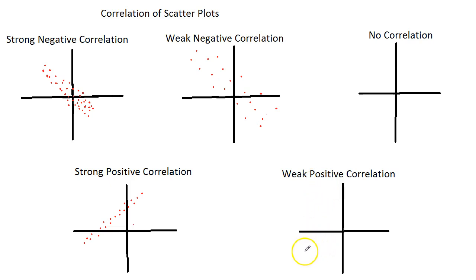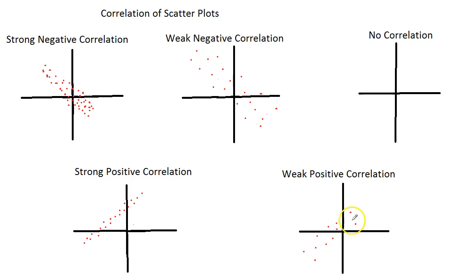Weak positive correlation would be a lot like the weak negative correlation, except a trend line drawn through them would be a line with a positive slope.